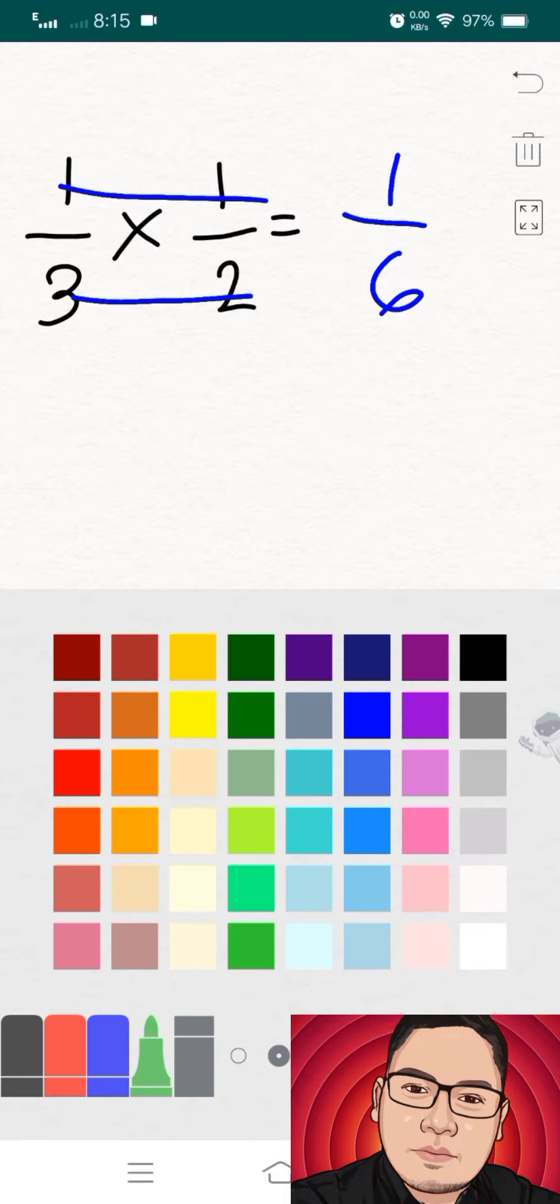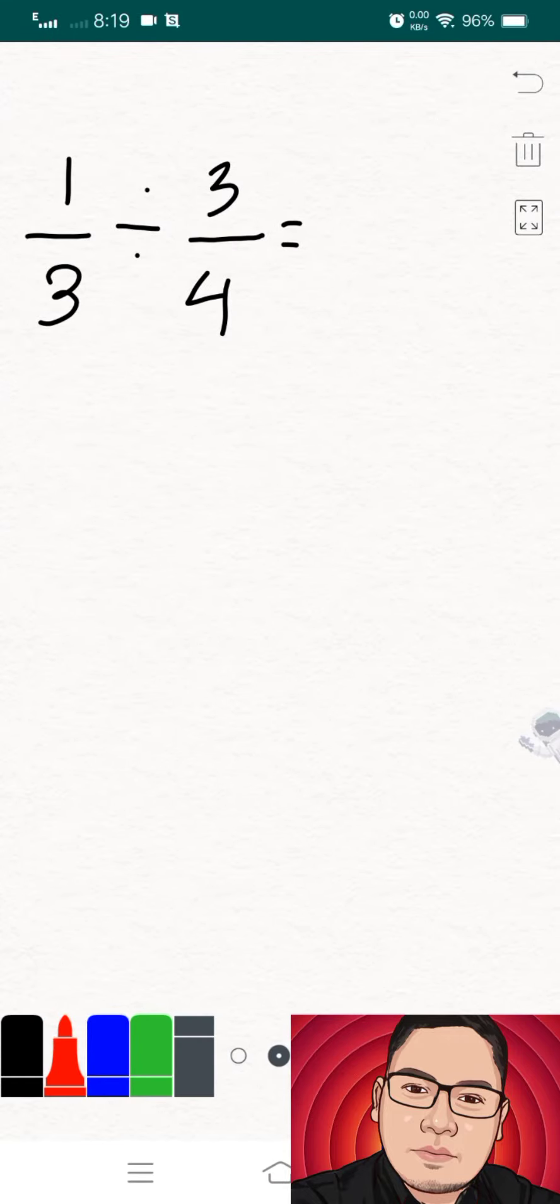So therefore that would be our final answer. Well, next is the division on fractions. Now how to divide two fractions? First thing to do is you have to turn the second fraction upside down, then multiply.